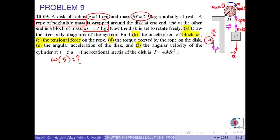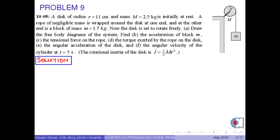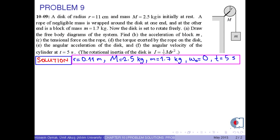F: Find the angular speed of the cylinder at t equals 5 seconds. The rotational inertia of the disk is I equals one-half times capital M times r squared. First, we write the given quantities in SI units.